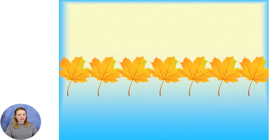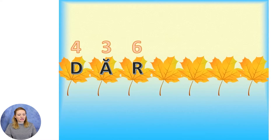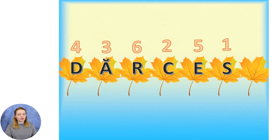Vă propun mai întâi o gimnastică matematică. Răspundeți rapid. Numiți numărul căruia îi corespunde descrierea dată de mine. Cine este predecesorul lui 5? 4. Succesorul numărului 2? 3. Predecesorul numărului 7? 6. Cel mai mic număr par? 2. Numărul care are vecinii 4 și 6? 5. Cel mai mic număr impar? 1. Numărul impar mai mare decât 6 și mai mic decât 9? 7.